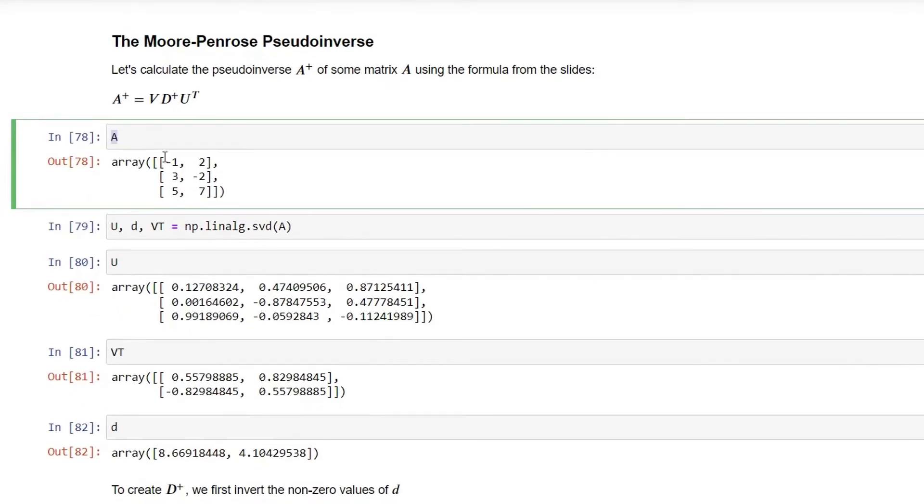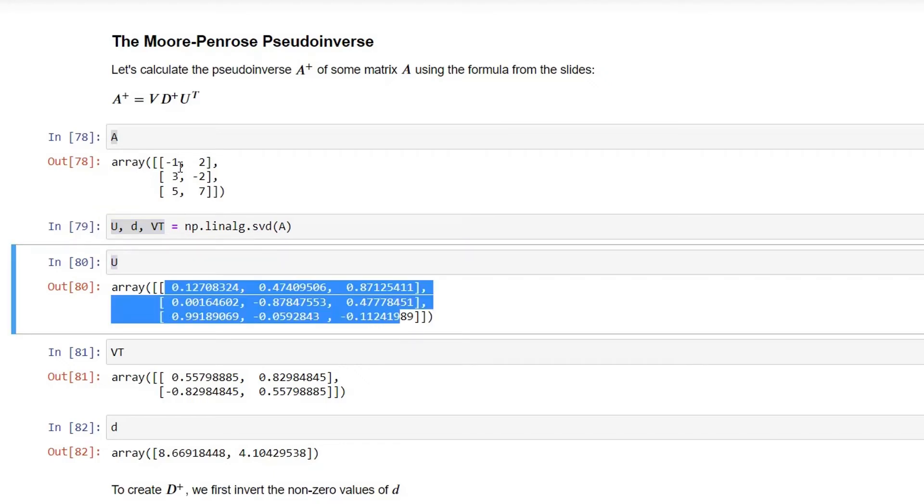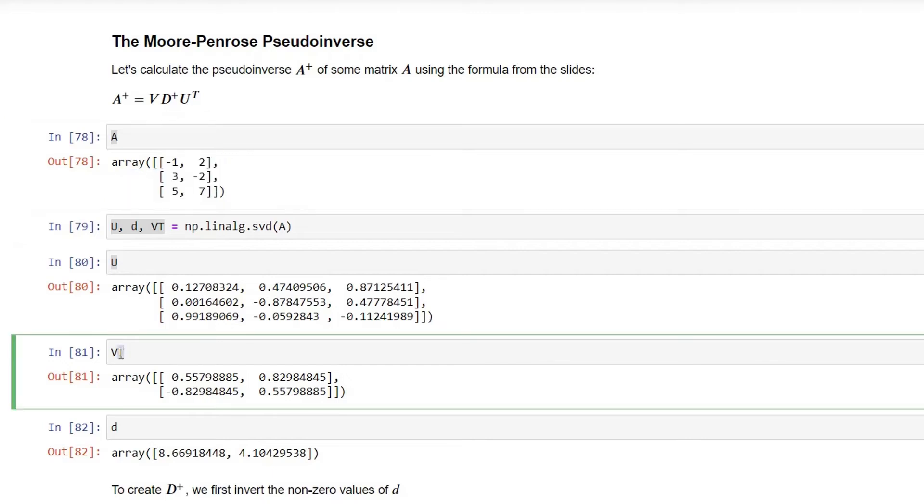So this is the same matrix A that we have used in the previous lecture and I am using the singular value decomposition function within the NumPy library that we have used earlier in order to calculate these three elements. So as I said earlier, U is the left singular vector each vector corresponding to the rows of the matrix A. V transpose is the matrix composed of the right singular vectors corresponding to the columns of the matrix A and D is the eigenvalues for our matrix.